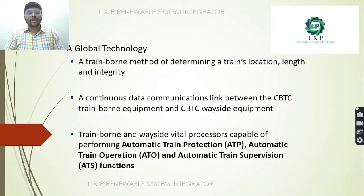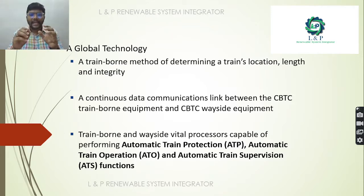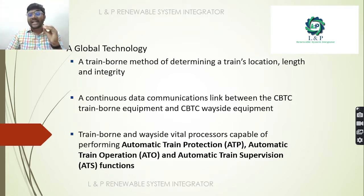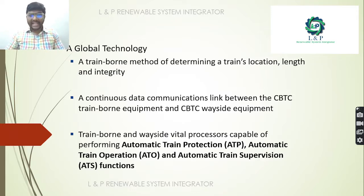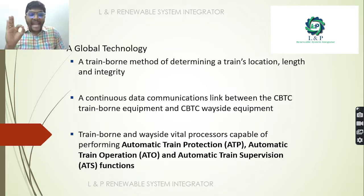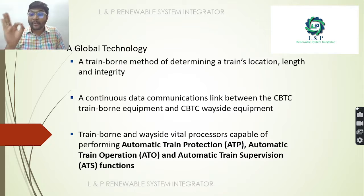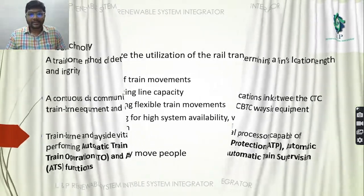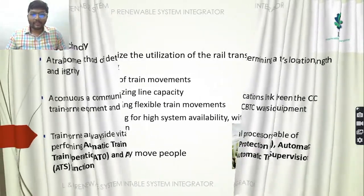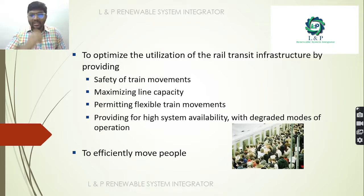CBTC is a global technology. This train-bound method is used to exactly determine the train location, length, and integrity. It provides a continuous data communication link between the train-bound equipment and the wayside equipment. It has a vital role in performing ATP — Automatic Train Protection — ATO — Automatic Train Operation — and ATS — Automatic Train Supervision — functions.